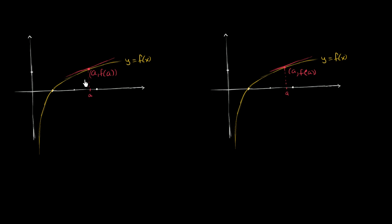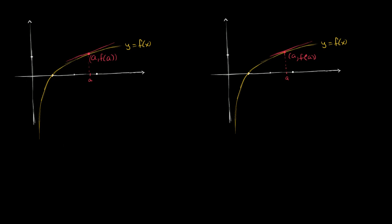So let's think about how we could find the slope of the tangent line to this curve, what I've drawn in red, at the point x equals a. And we've already seen this with the definition of the derivative.